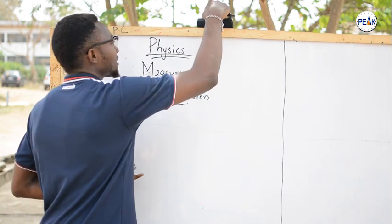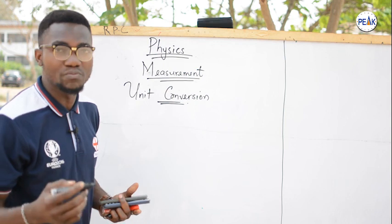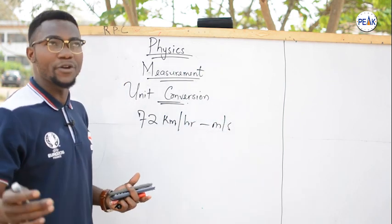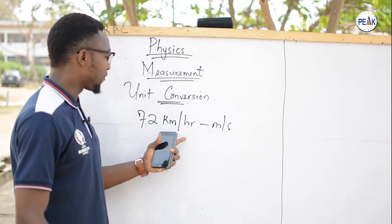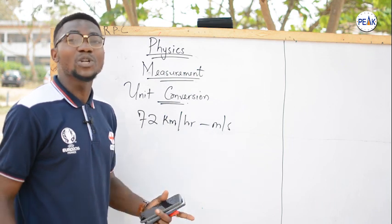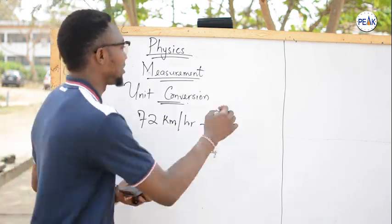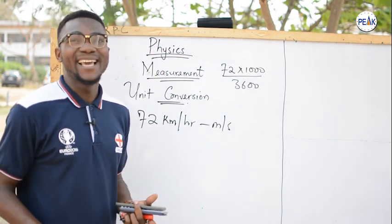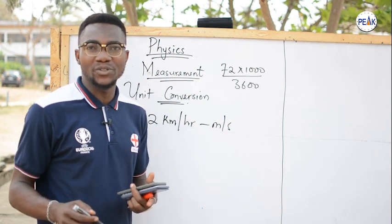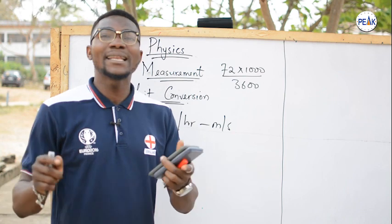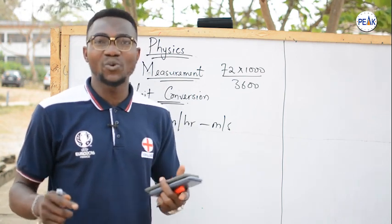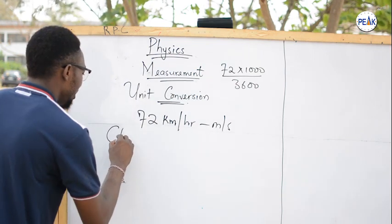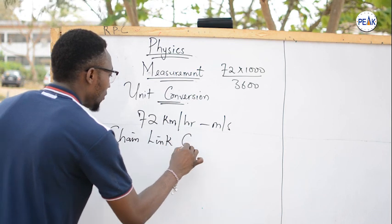Let's take an example: convert 72 kilometers per hour to meters per second. So we have 72 km/h — a numerator of kilometers and a denominator of hours. We are going to a numerator of meters and a denominator of seconds. What you were told is to multiply by 1000 and divide by 3600. Let me show you how that is derived using what I call the chain link conversion method. If you know how to use this method, you will never get any conversion question wrong.